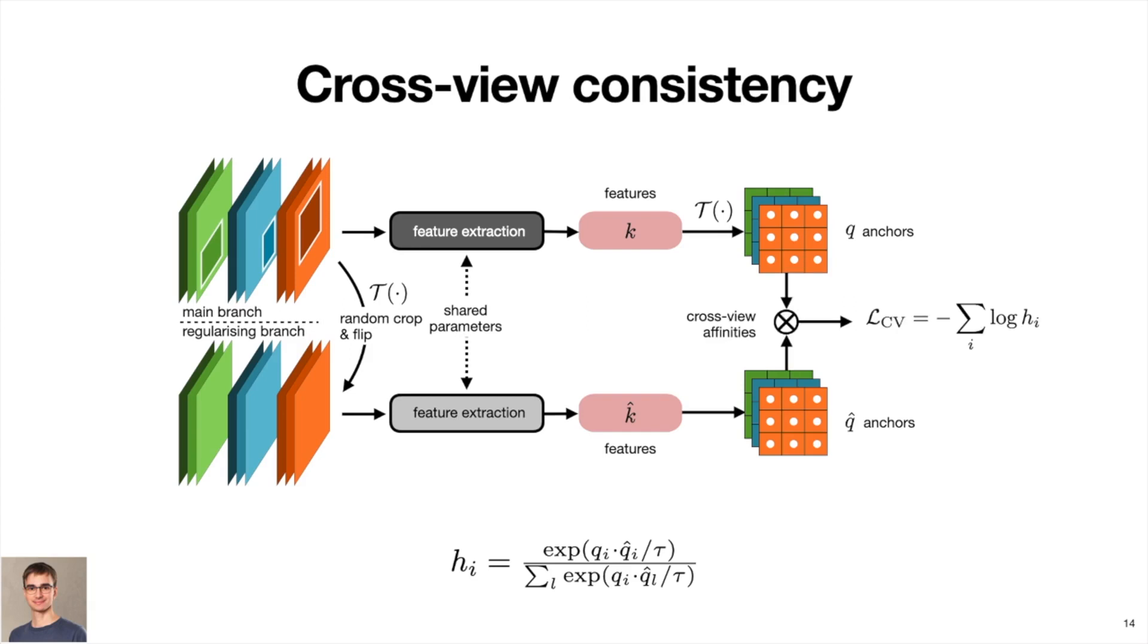The second, cross-view loss, minimizes the relative distance between these corresponding features with respect to the distances of the non-corresponding pairs by means of cross-entropy. We add this loss term to the main loss described previously with a small trade-off factor.